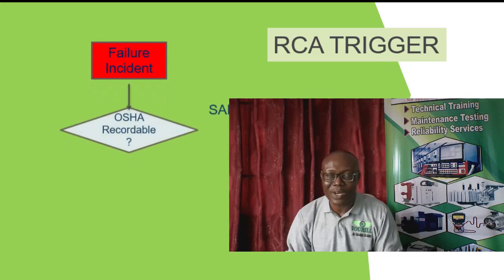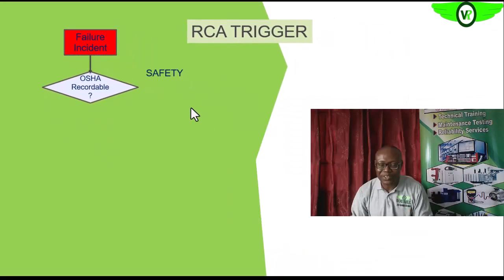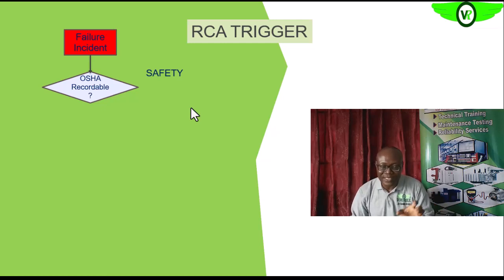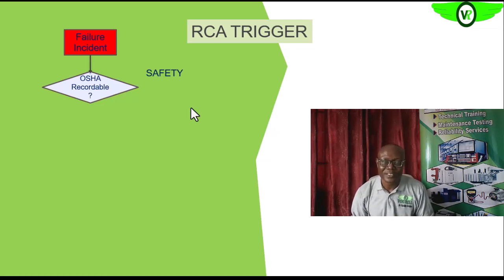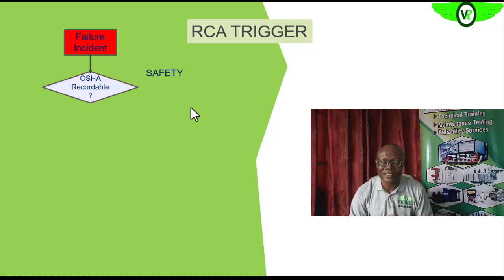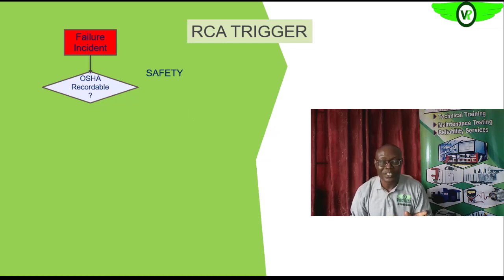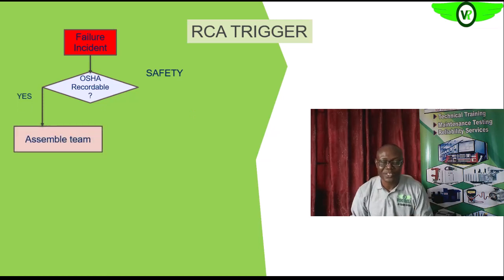The first question we ask about that failure incident is: is it safety critical? Does it compromise the safety of our operations, the plant, or the asset — first personnel, then the environment, then the asset? If it is safety critical, we need to assemble an RCA team to start the RCA analysis.